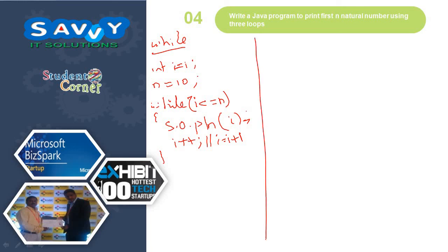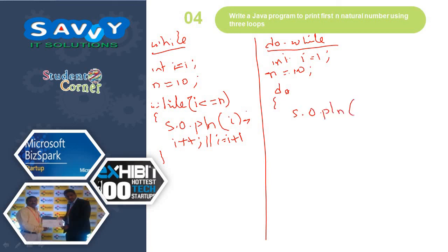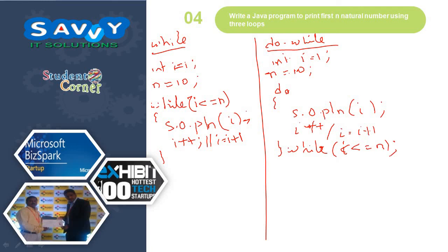Similarly for do-while: int i = 1, n = 10. Then do { System.out.println(i); i++ or i = i + 1; } while(i <= n). This is the second way of representing the same program.